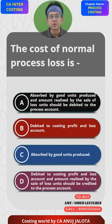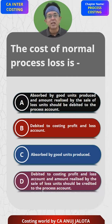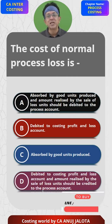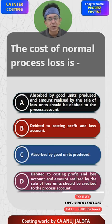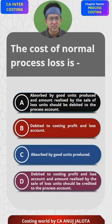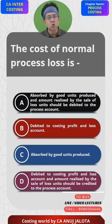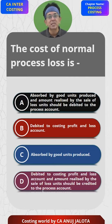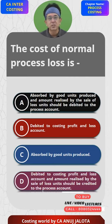This is where process account understanding starts. Normal loss is that loss which was expected to happen. We value normal loss at scrap value, so that the cost of normal loss automatically remains in the process account and is absorbed by the good units.